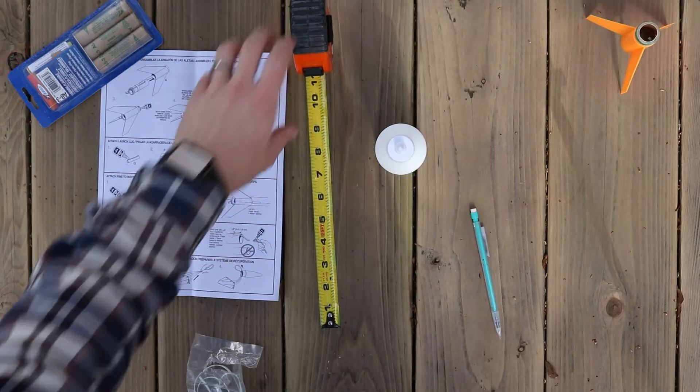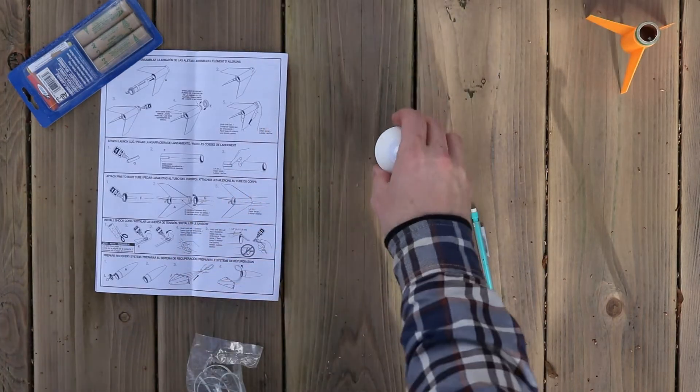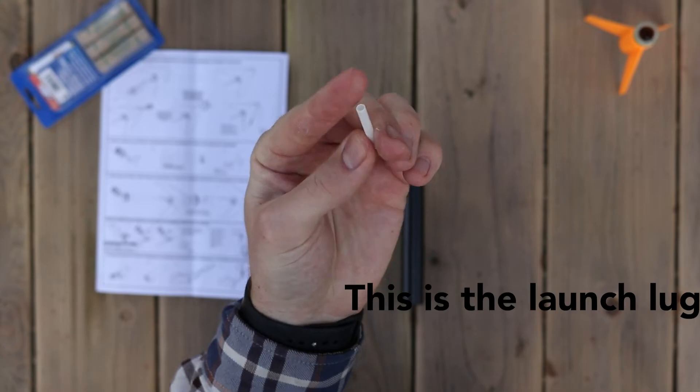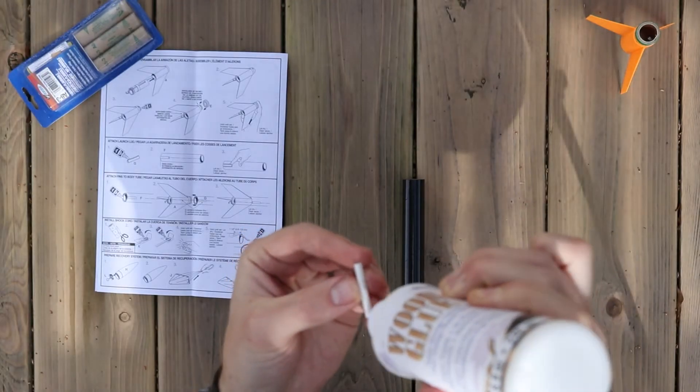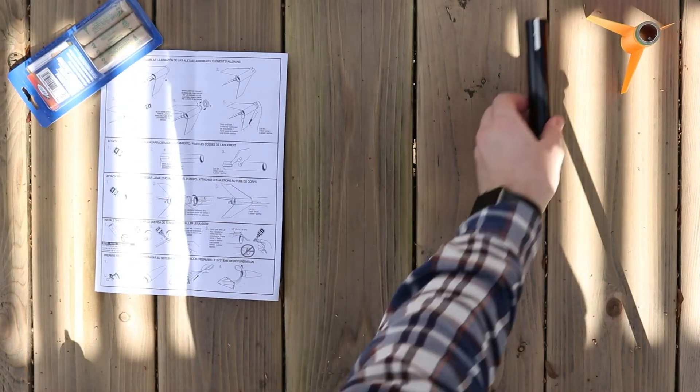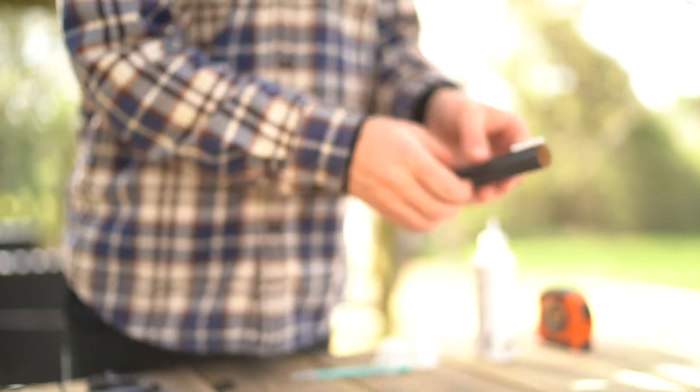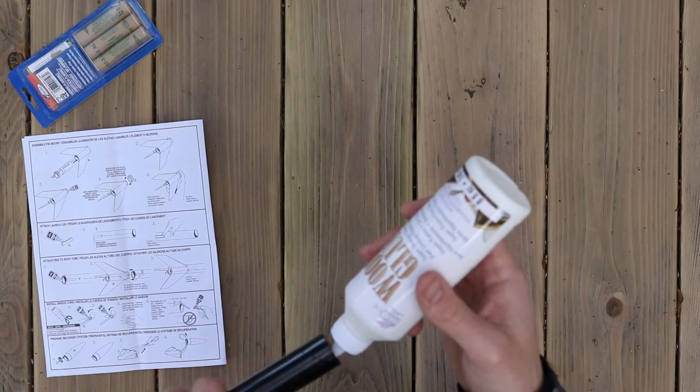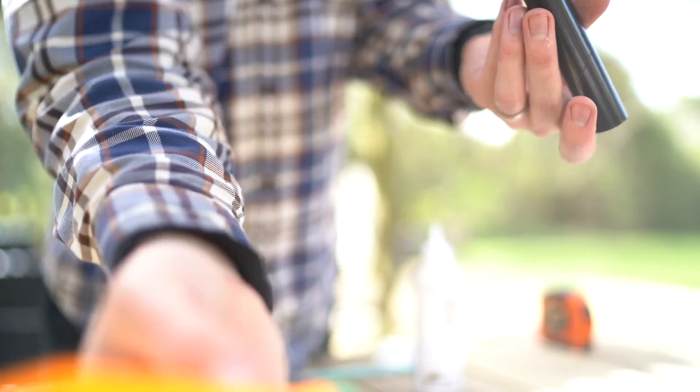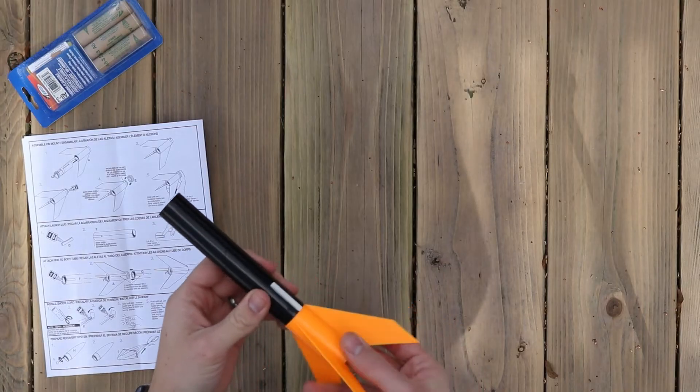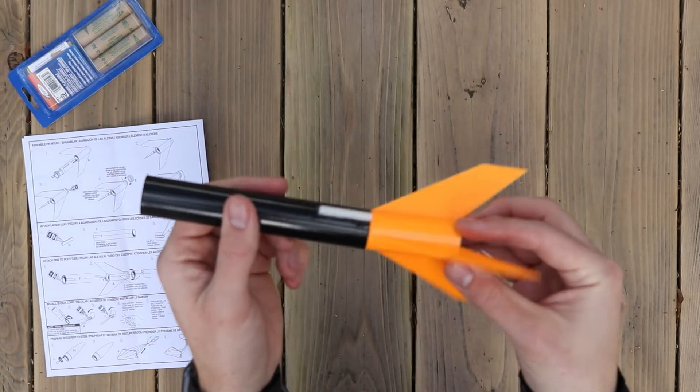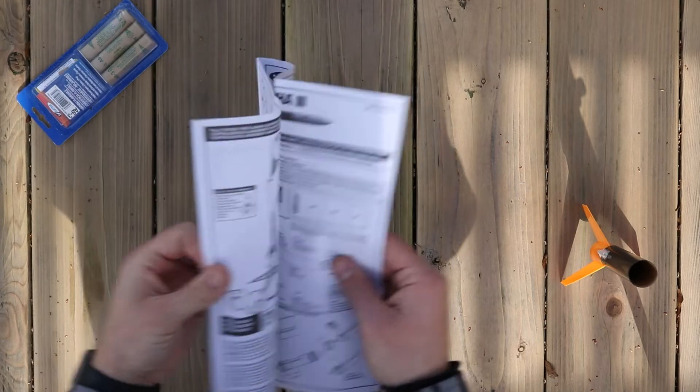Next, we'll install the launch lug. This is the piece that the launch rod will slide through to ensure your rocket launches straight. Grab your body tube and launch lug. Apply glue to one side of the launch lug and install it at the base of the body tube, so the bottom of the body tube and bottom of the launch lug are even. Then, let it dry. Next, we'll attach the body tube to the orange plastic fin unit. Inside of the body tube, at the same side as the launch lug, make a circle of glue. Install the fin unit. Now, it's very important that the launch lug is centered between two of the fins. Remember, the launch lug is where the launch rod will eventually slide through, so if you install the launch lug directly above a fin, it will not work.